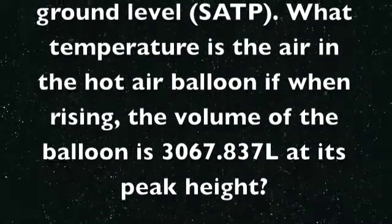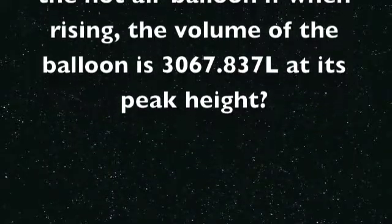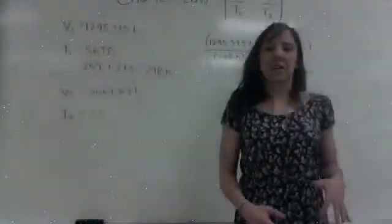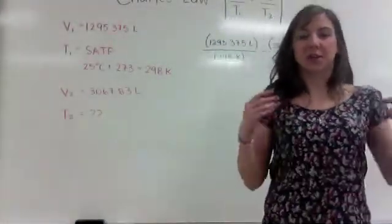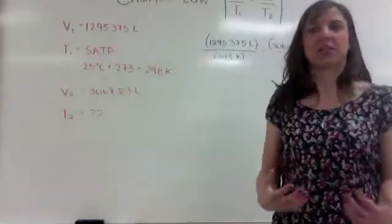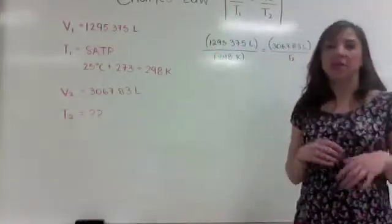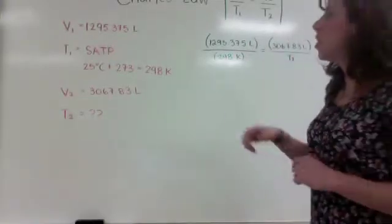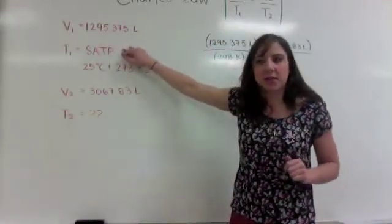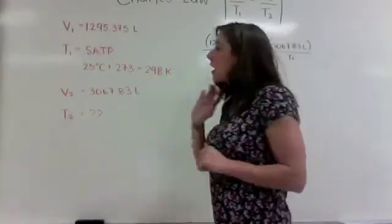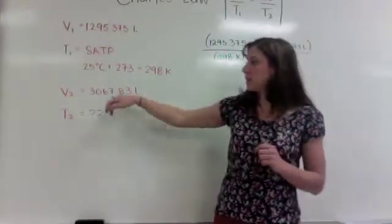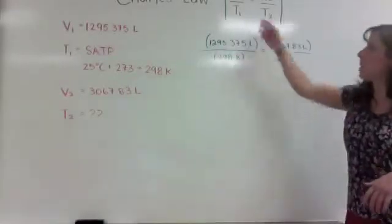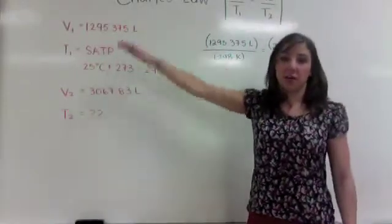A common example of Charles' Law is the hot air balloon. As the temperature increases, the volume of the gas inside the balloon gets bigger and the balloon rises. In this example, volume 1 at SATP is 1295.375 liters. SATP is 25 degrees Celsius, which calculates to 298 Kelvin. Volume 2, as the gas heats up, is 3067.83 liters, and we're solving for the temperature T2 required for the balloon to reach that volume.